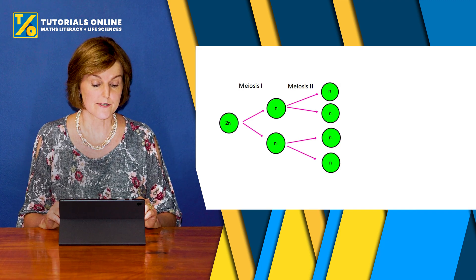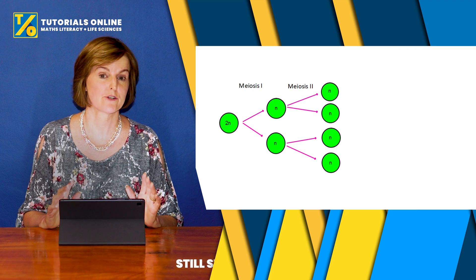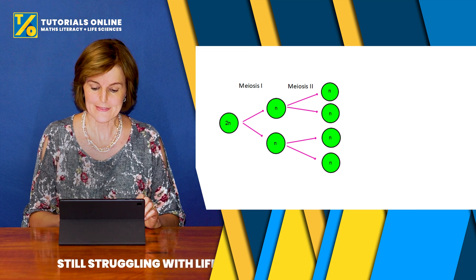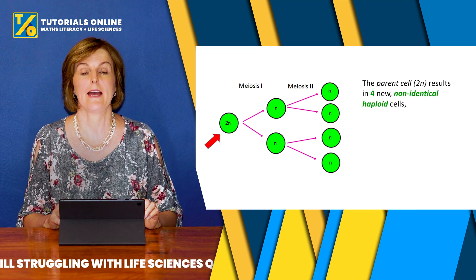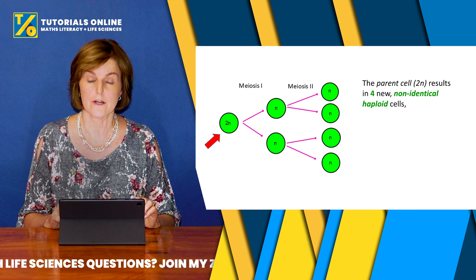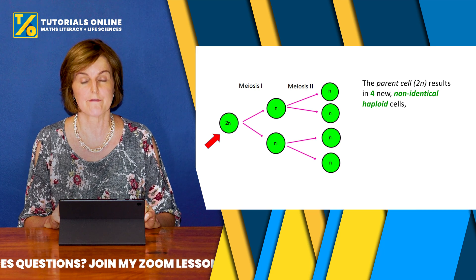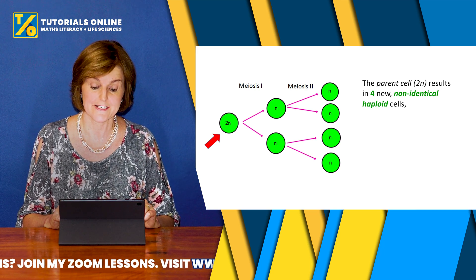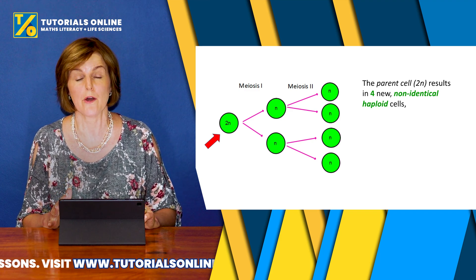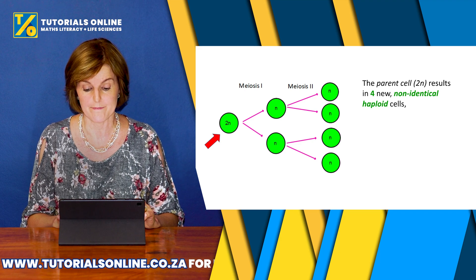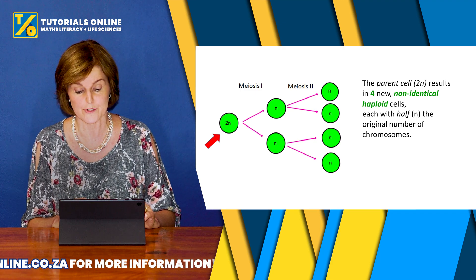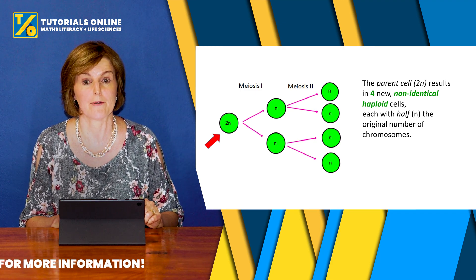If you look at the slide now, you can see that meiosis consists of two sections or two divisions: meiosis one and meiosis two. On the left you've got the diploid parent cell, and on the right-hand side the parent cell, which is diploid 2N, results in four new non-identical haploid cells. So the four cells at the end of meiosis two are non-identical, and each has half the number of chromosomes as the original parent cell.